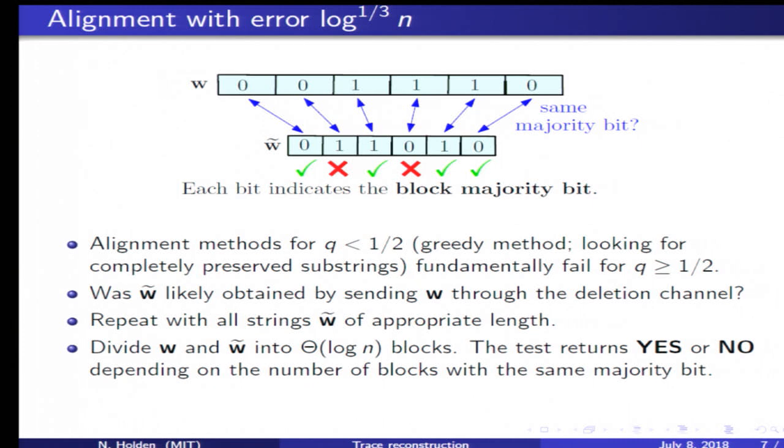In the example shown, we have such agreement in four out of six cases. If the number of agreements is sufficiently high, the test is positive. Otherwise, it's negative.